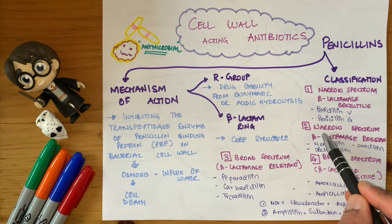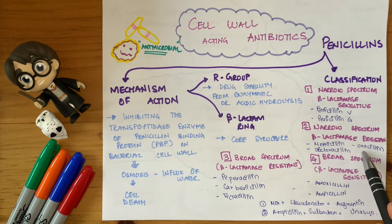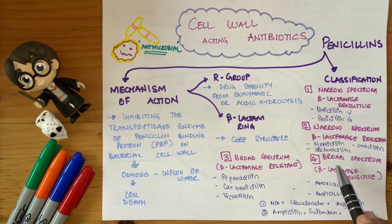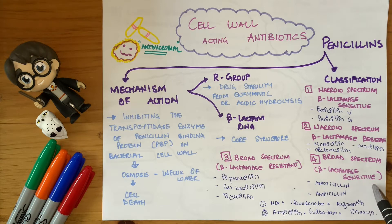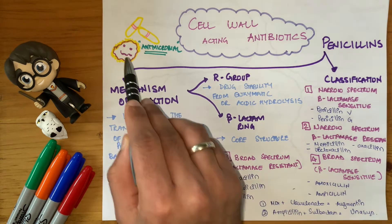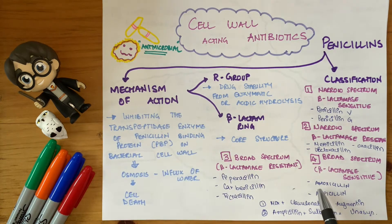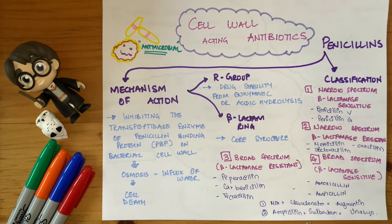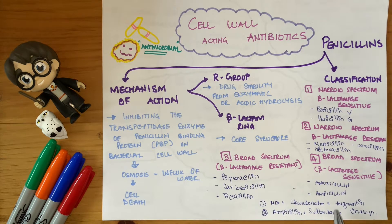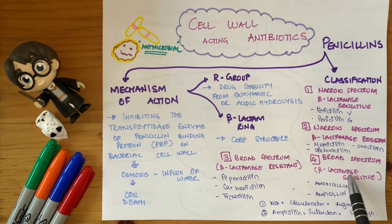Narrow spectrum beta-lactamase resistant drugs include methicillin, oxacillin, and dicloxacillin. Then come the broad spectrums — the heavy duty ones. Broad spectrum beta-lactamase sensitive will be inactivated when bacteria release beta-lactamase; these include amoxicillin and ampicillin. To make these drugs strong against beta-lactamase, we add clavulanate to amoxicillin and sulbactam to ampicillin. These two agents are anti-beta-lactamase supporting structures that make the drugs beta-lactamase resistant.